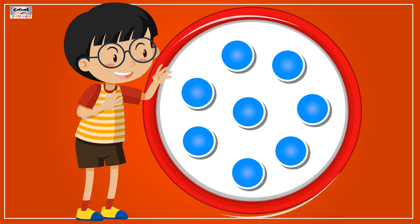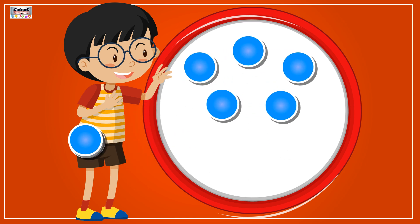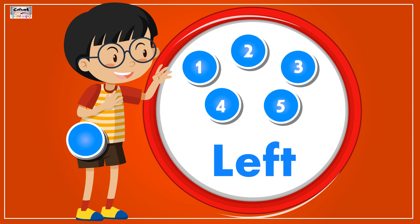Out of 8 circles, if 3 are taken away, then only 5 are left.